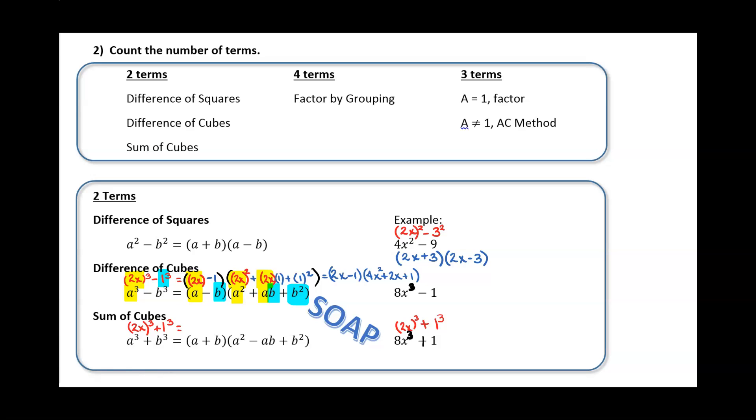So if I were to factor this sum of cubes, I'm going to get the exact same thing: 2x, 1, 2x, 1, 4x squared, 2x, 1, 4x squared, 2x, 1. The only thing that's going to change are just the signs. So since this was addition, it's going to be same, opposite, always positive.